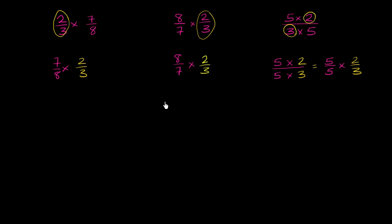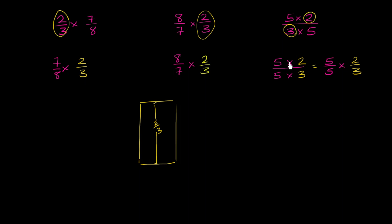Let's visualize each of these expressions by first visualizing 2/3. The height of this bar right here represents 2/3. Now let's think about the expression on the right: 5/5 times 2/3. Well, what's 5/5? 5/5 is the same thing as 1. This is literally just 1 times 2/3, which equals 2/3. So that expression — 5 times 2 over 3 times 5 — is equal to 2/3.